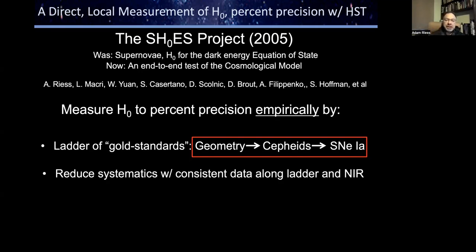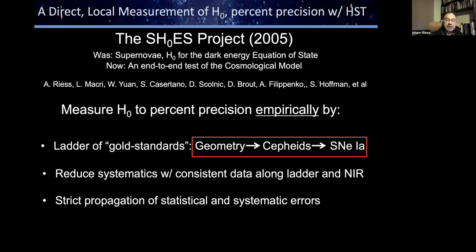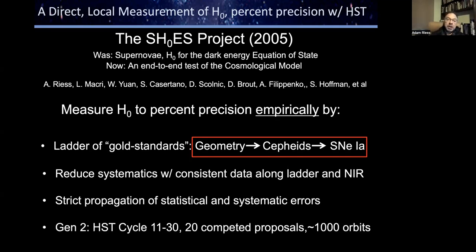We sought ways to reduce systematic errors by collecting data consistently, making observations in the near infrared to mitigate dust effects, and through strict propagation of errors while keeping track of covariance for realistic uncertainties. This is a Generation 2 project using the Hubble Space Telescope — it has involved about 20 competed proposals and taken up about 1,000 orbits.